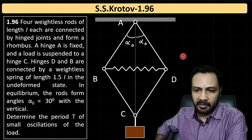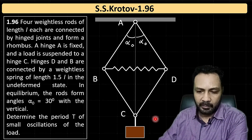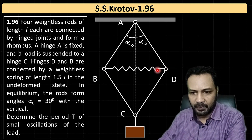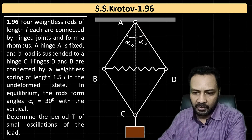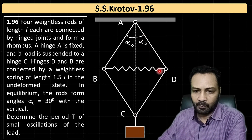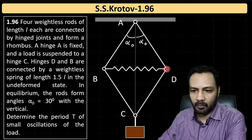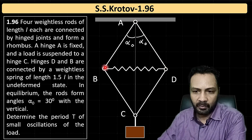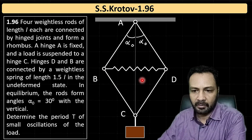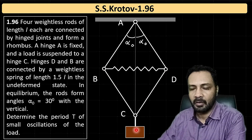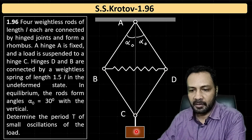If we disturb the system from equilibrium, the spring will experience compression as the weight pulls downward. Points B and D will undergo circular motion since point A is fixed. The mass at C has weight acting downward, and tensions from the two rods acting on it. The spring connects B and D horizontally.